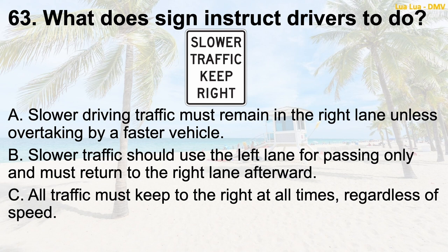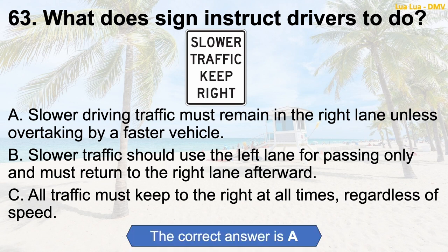Question 63: What does the sign instruct drivers to do? A. Slower driving traffic must remain in the right lane unless overtaking by a faster vehicle. B. Slower traffic should use the left lane for passing only and must return to the right lane afterward. C. All traffic must keep to the right at all times, regardless of speed. The correct answer is A: Slower driving traffic must remain in the right lane unless overtaking by a faster vehicle.